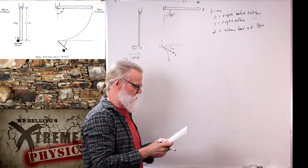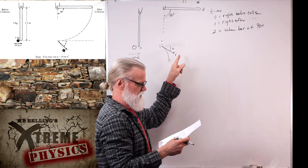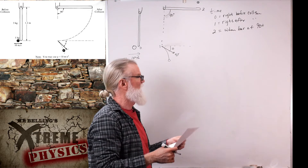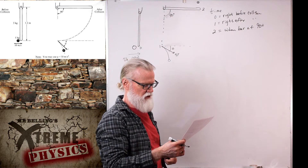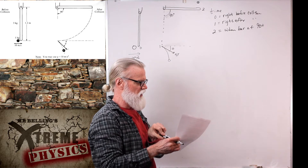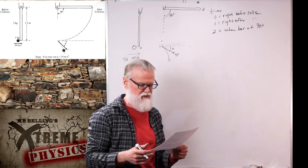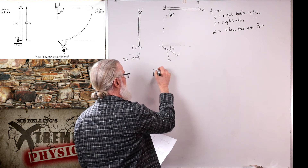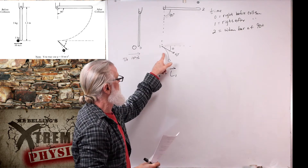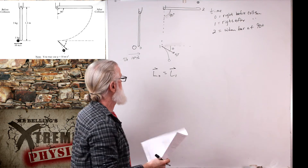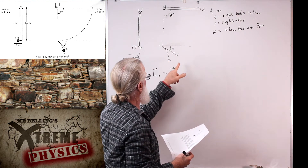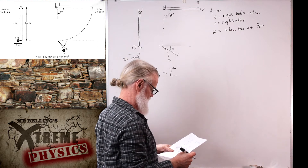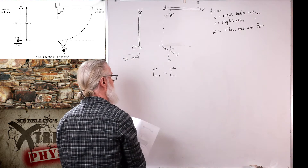Immediately after the collision, the object moves with speed V at angle theta relative to the original direction. The bar swings freely and reaches 90 degrees with respect to the vertical. The moment of inertia of the bar about the pivot is ML²/3. Ignore all friction. We need to determine the angular velocity of the bar immediately after the collision. My first inclination might be to use angular momentum conservation from t₀ to t₁, but we can't calculate the angular momentum of the particle because we don't know theta. So that approach won't work.